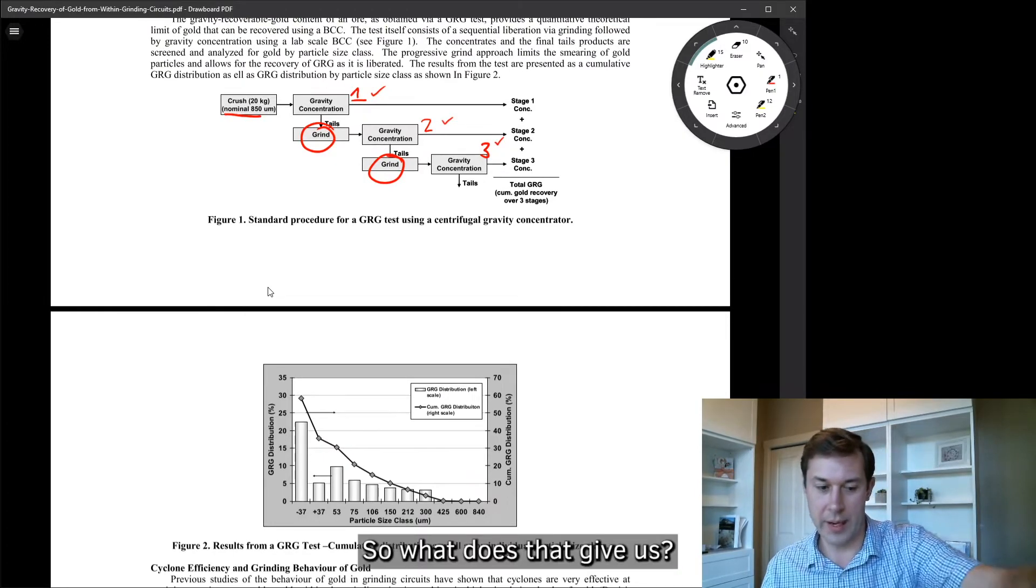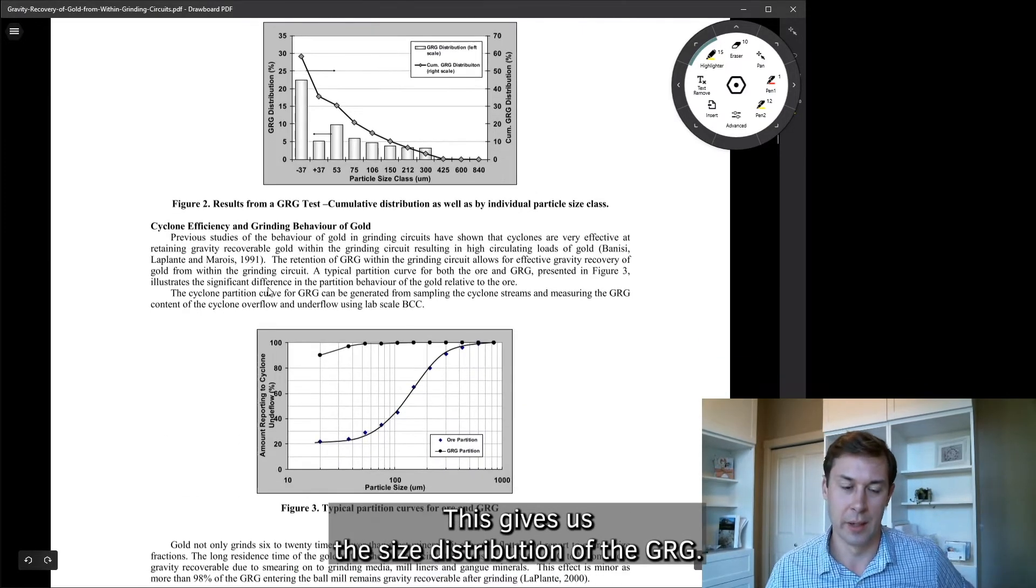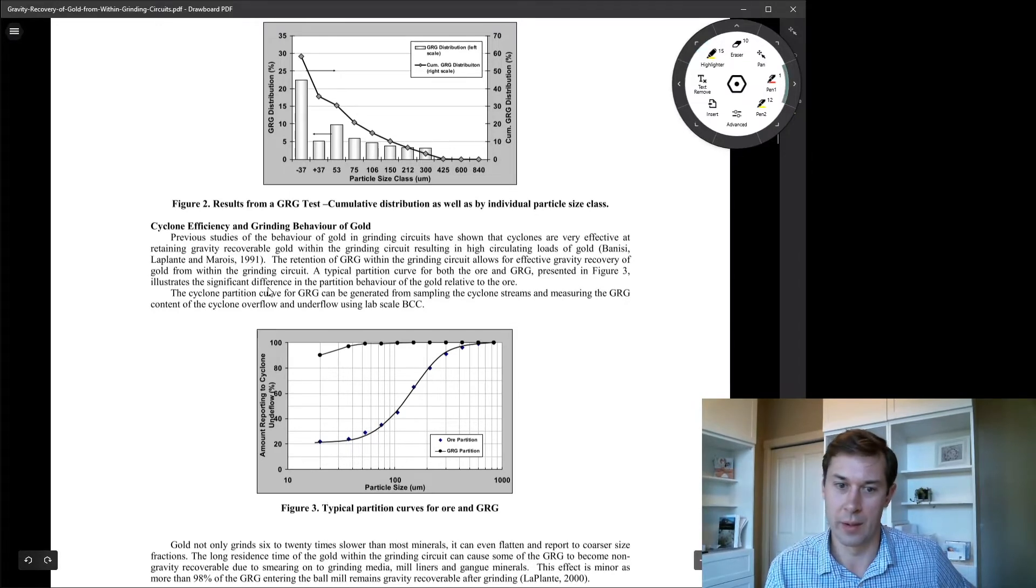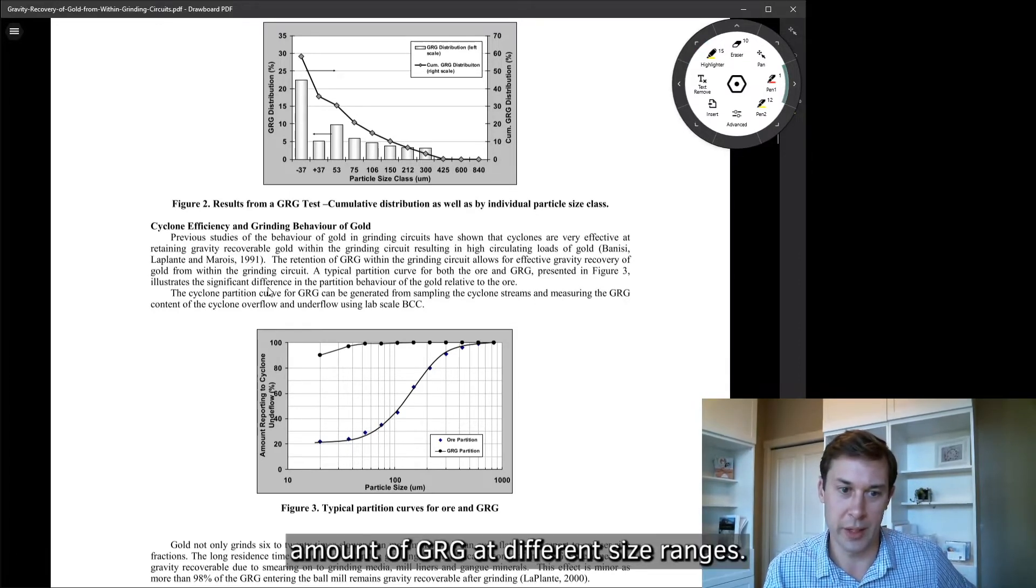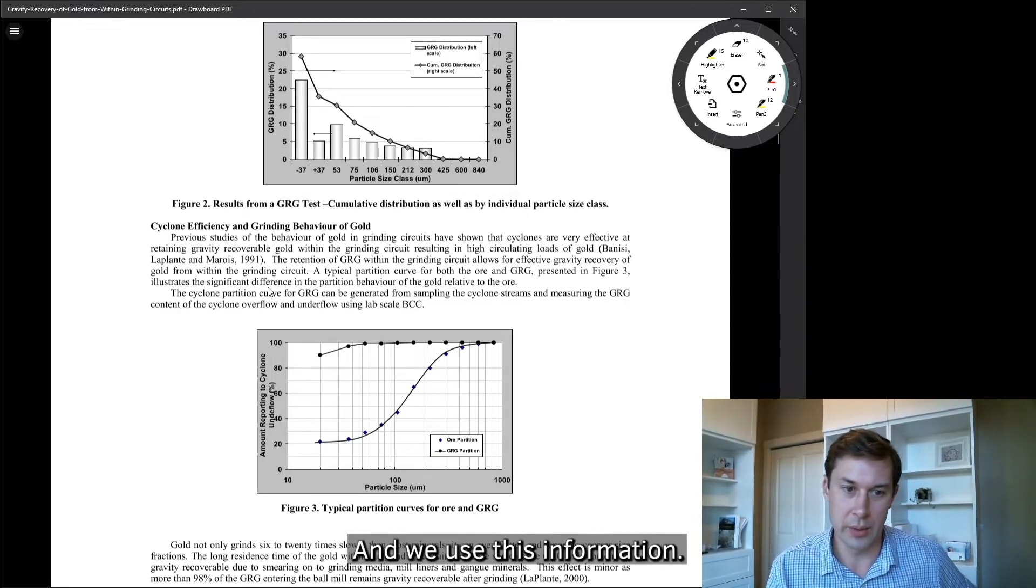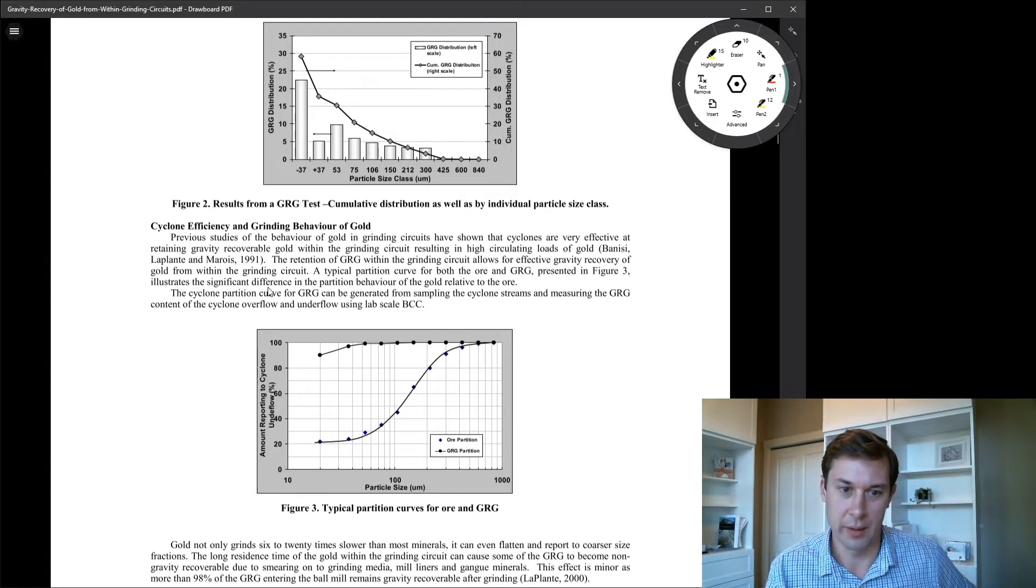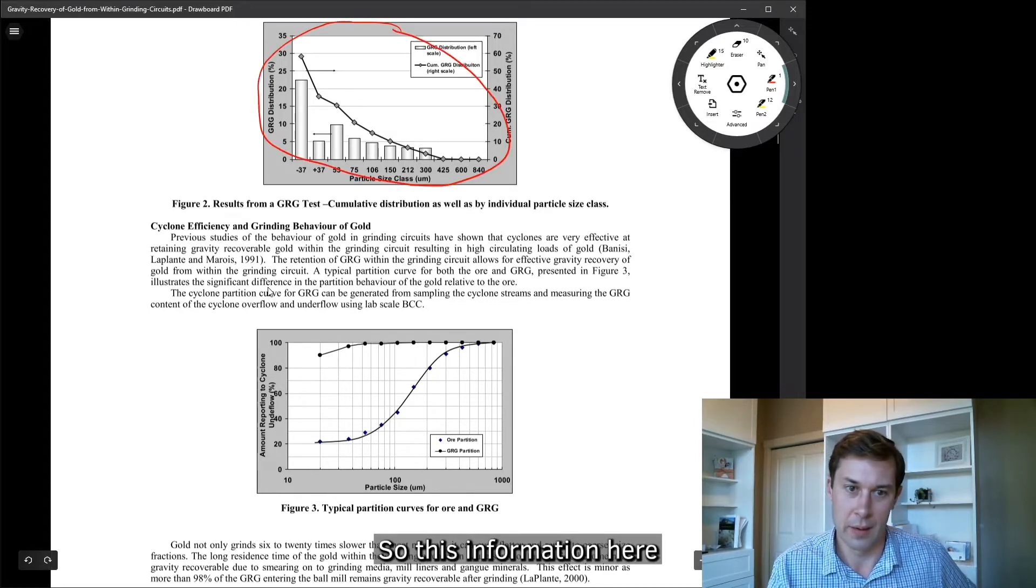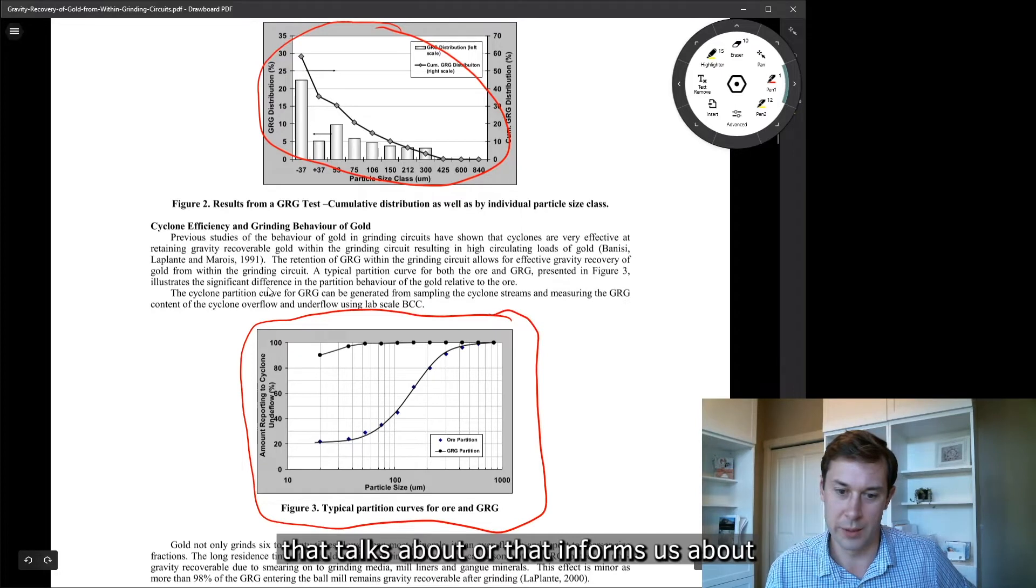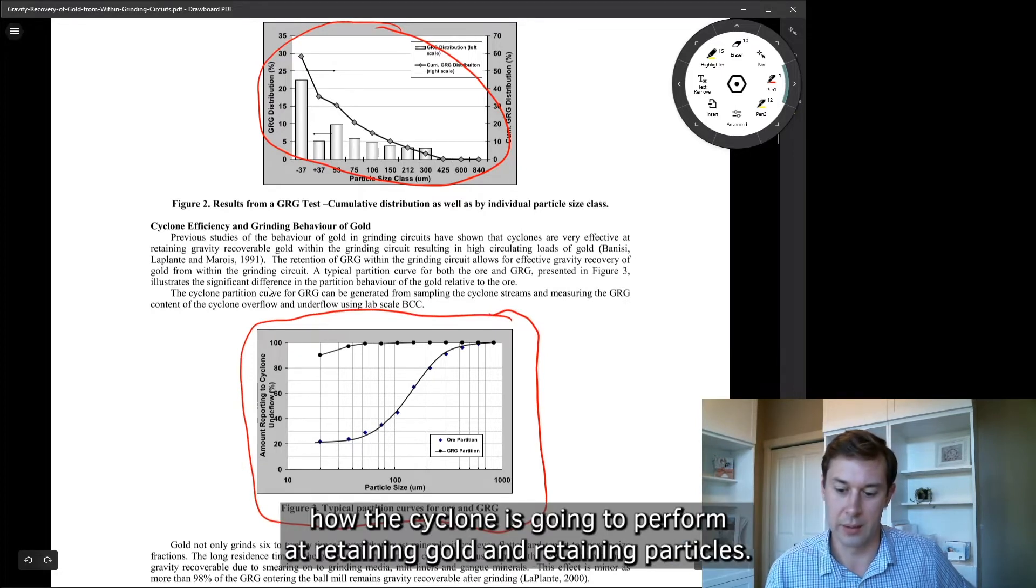So what does that give us? This gives us the size distribution of the GRG. And here's just an example where we're seeing the different amounts of GRG at different size ranges. And we use this information, so this information here, to then make a partition curve that talks about or that informs us about how the cyclone is going to perform at retaining gold and retaining particles.